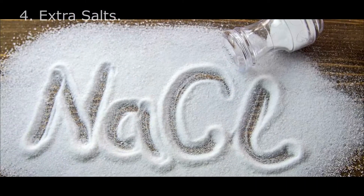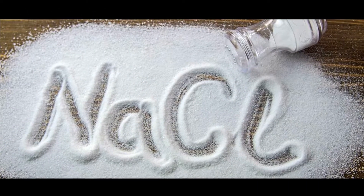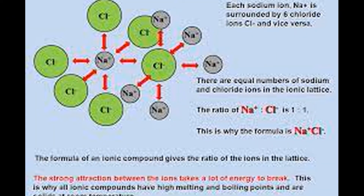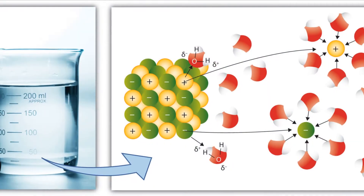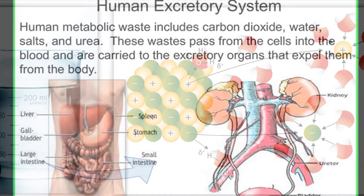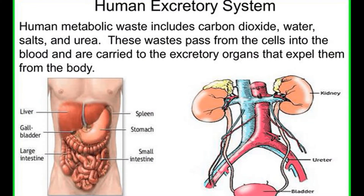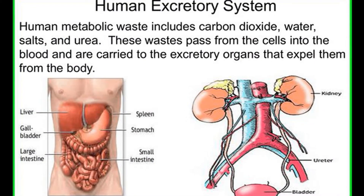Extra salts: Such as common salt NaCl — sodium and chloride ions, or any other ions — are needed in the body only in certain proportions. Any extra quantity must be removed. Extra salts are expelled along with the urine.